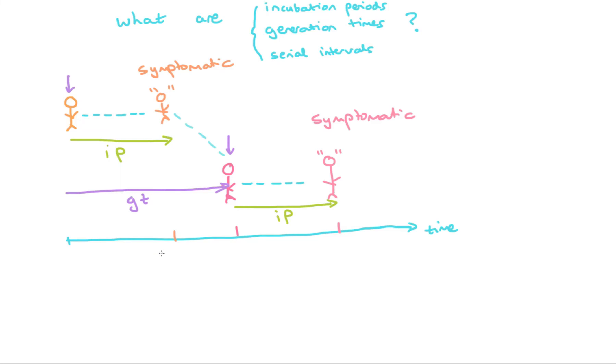Like the incubation period, the generation time isn't just a fixed number. There is likely a distribution because it takes different amounts of time for a person to infect a subsequent person. We can imagine plotting the distribution of generation times, which might look something like this.